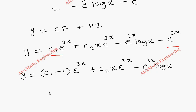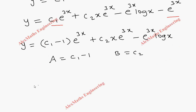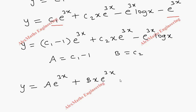We can take the constant (c₁ - 1) as A and c₂ as B, so the complete solution is: y = A·e^(3x) + B·x·e^(3x) - e^(3x)·log x.